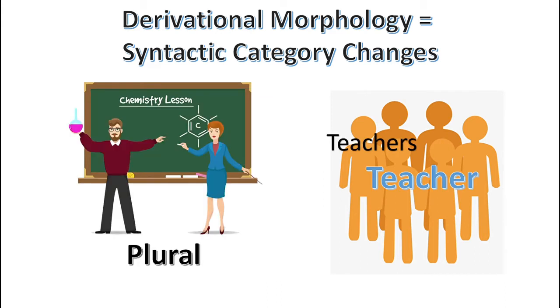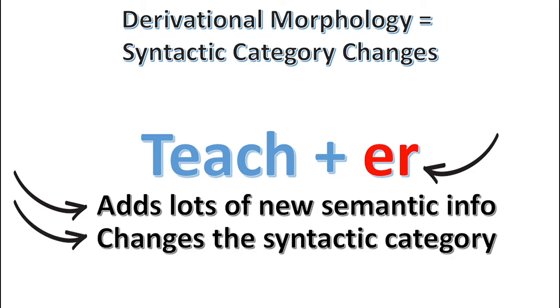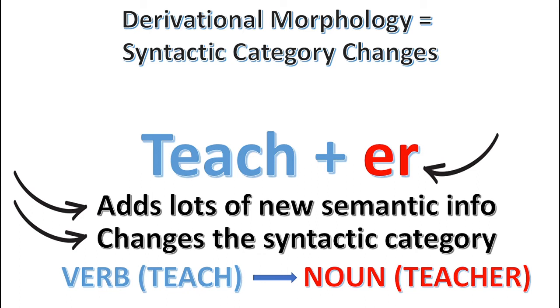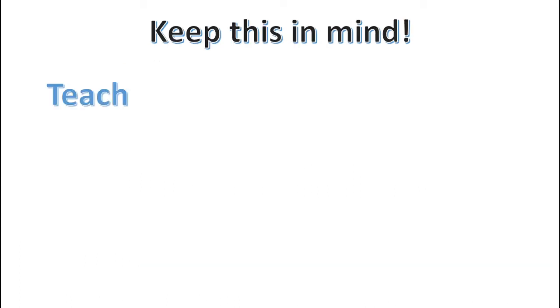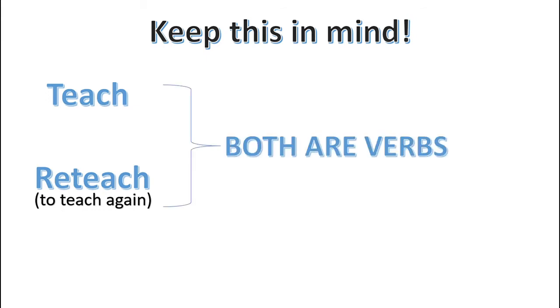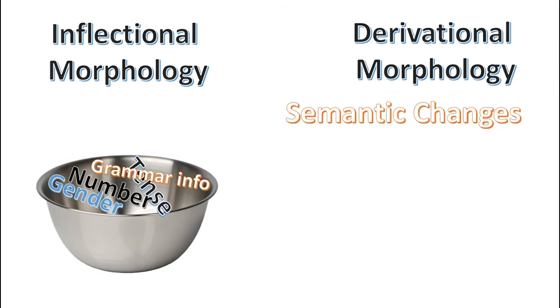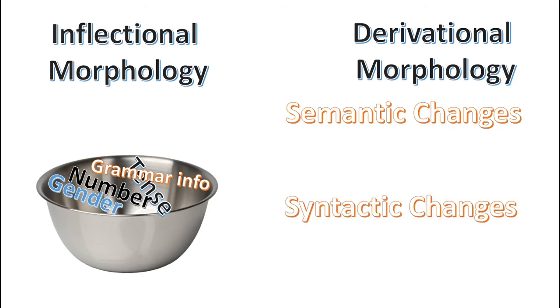This is because the suffix -er added considerable semantic information — i.e., 'a person who teaches' — and changed the syntactic category from a verb, 'teach,' to a noun, 'teacher.' Keep in mind that derivation doesn't necessarily change the syntactic category of the base. For instance, 'reteach' means to teach something again, but it is still a verb, just like its base 'teach.' So: inflection adds grammatical information, while derivation always changes the semantic meaning of the base, and often changes the syntactic category as well.